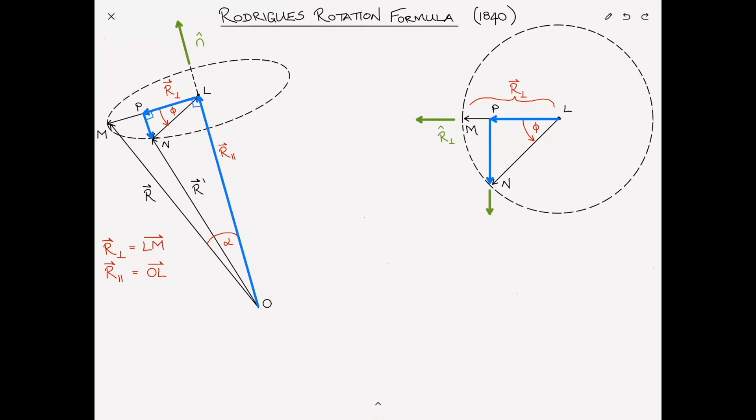Now, how do we find this vector in the direction of PN? Let me remind you that this vector is orthogonal to both the vector n̂ and the vector r̂ perpendicular. And as such, this vector PN is orthogonal to both n̂ and my vector r. So how do we find a vector that's orthogonal to both vector n̂ and r? We take the cross product of the two. n̂ × r will give me the vector that's perpendicular to both of them. And since it's a unit vector we want, we need to divide it by the magnitude of n̂ × r.